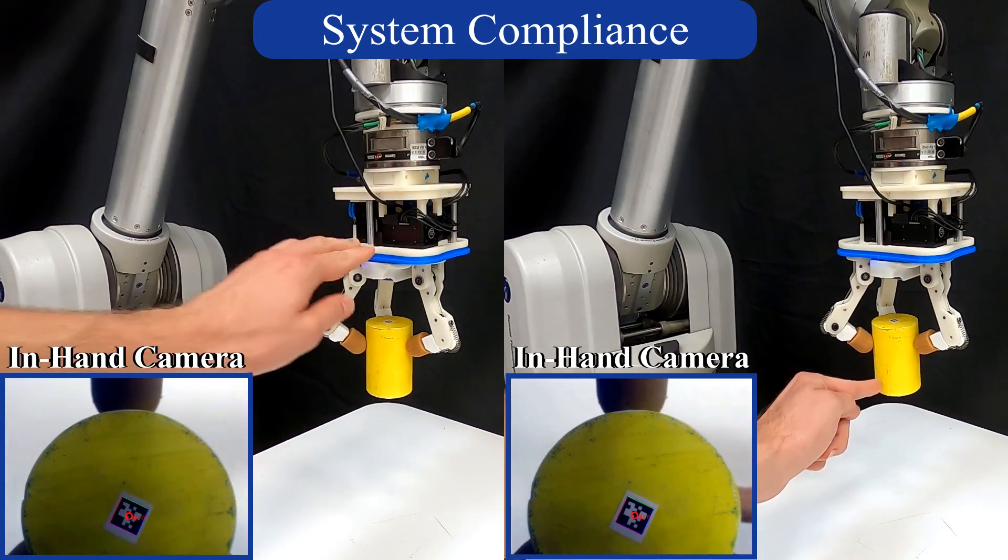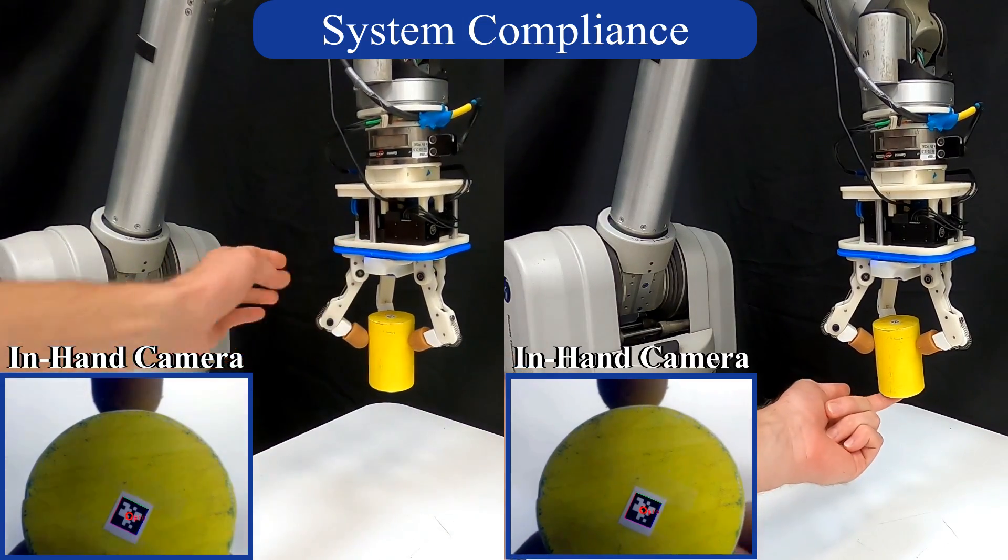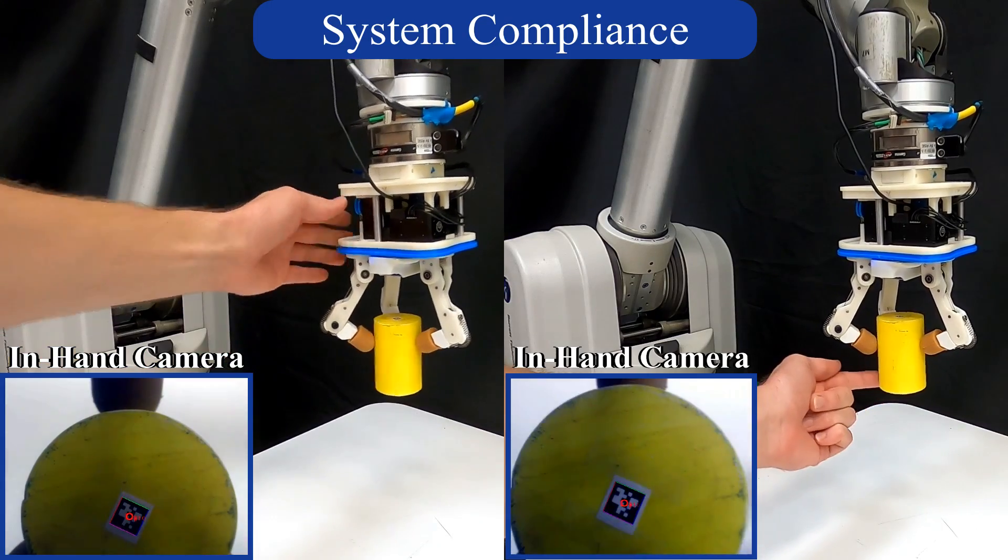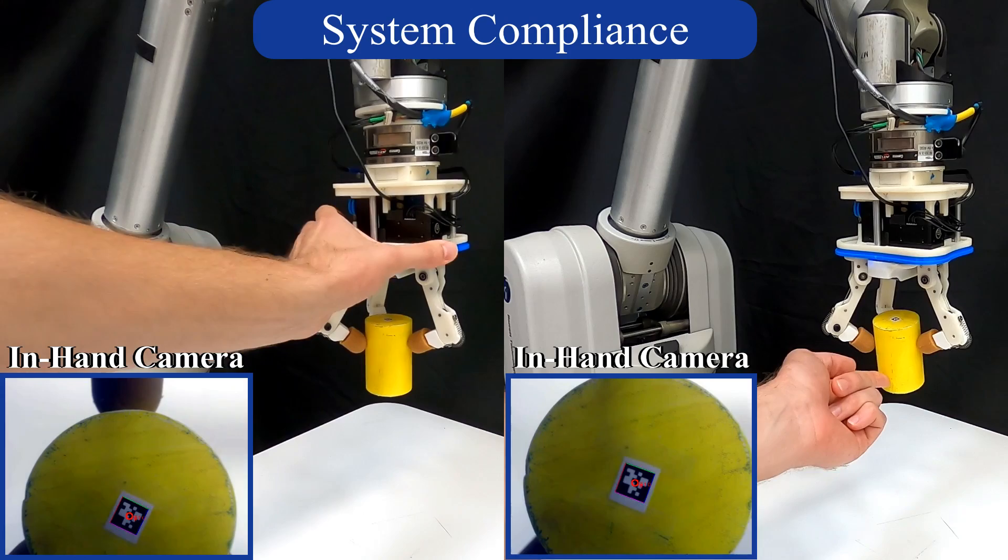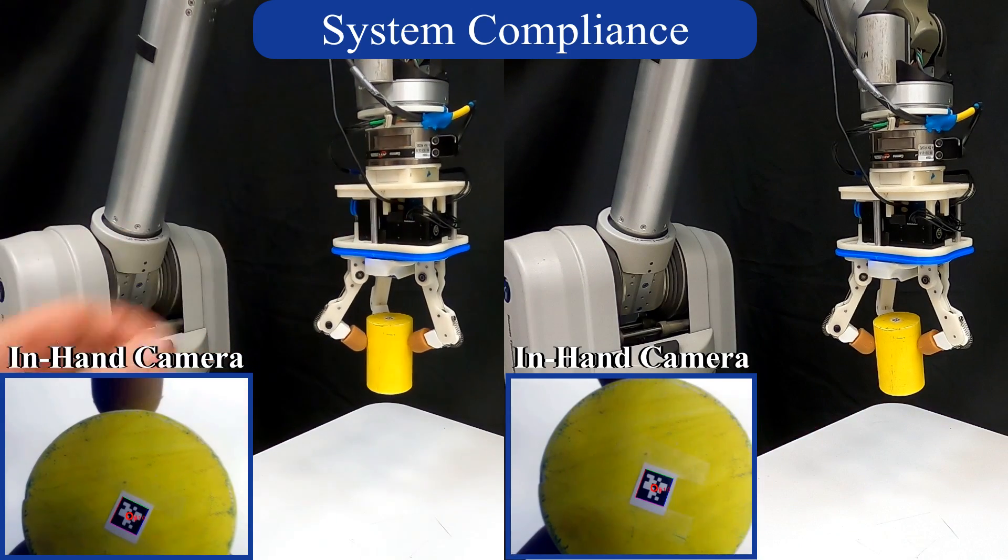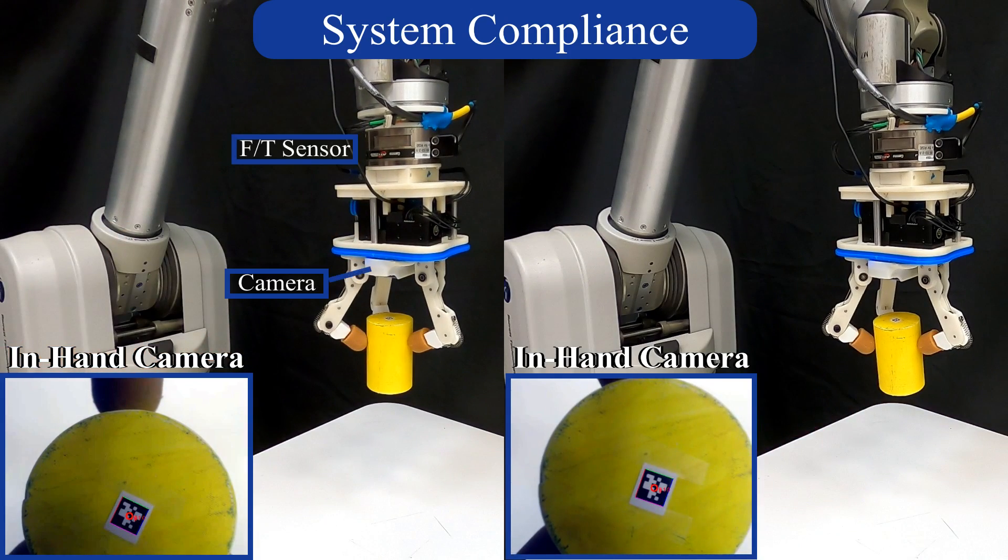Specifically, we rely on the passive-adaptive properties of a compliant system to help modulate forces along certain axes. The end effector itself serves as a low-impedance mechanism that limits the amount of force we can apply in certain directions. We monitor the state of the system via a 6-axis force torque sensor and an in-hand camera.